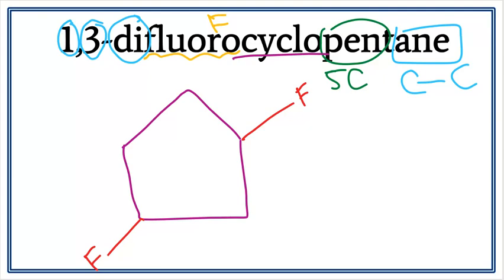So, this is the structure for 1,3-difluorocyclopentane.